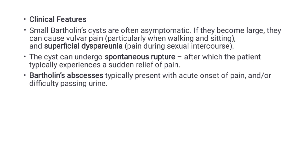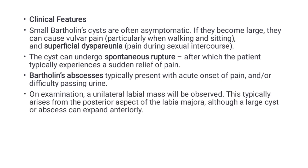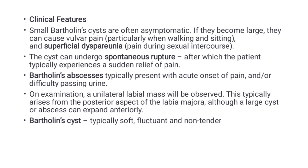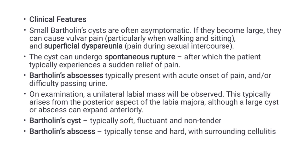Bartholin's abscesses typically present with acute onset pain and difficulties passing urine. On examination, there will be a unilateral labia mass, which typically arises from the posterior aspect of the labia majora, although a large cyst or abscess can expand anteriorly. A Bartholin's cyst is typically soft, fluctuant, and non-tender, whereas a Bartholin's abscess is typically tense with surrounding cellulitis — that is how you differentiate between the two.